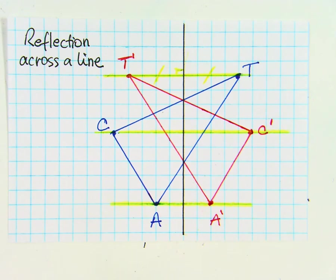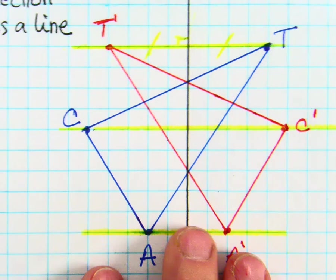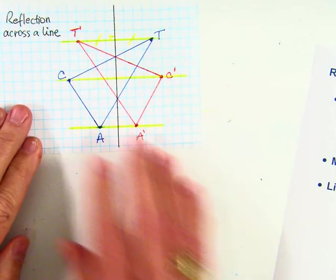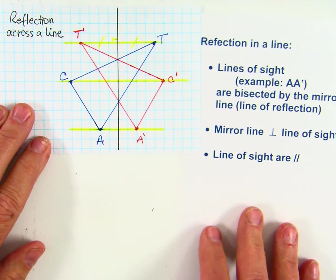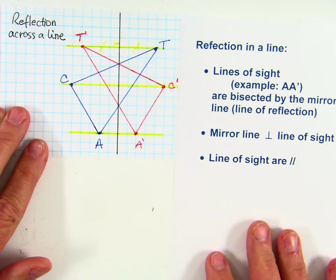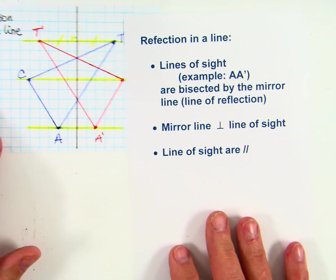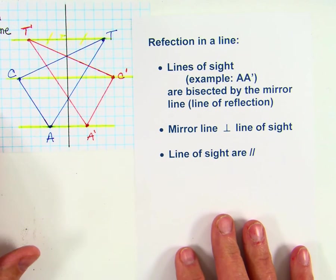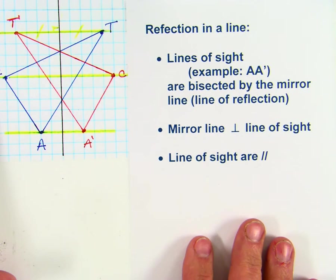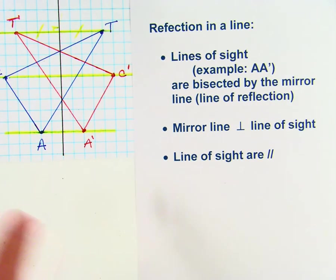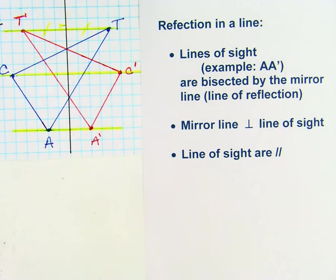So what do we see, again, about the characteristics of cat and cat prime? Reflection in a line. In or across, it doesn't matter. We say it both ways. So for reflections in a line, the lines of sight, for example, A and A prime, are bisected by the mirror line, which is the line of reflection. The mirror line is perpendicular to the lines of sight, each one of them. And the lines of sight are parallel.